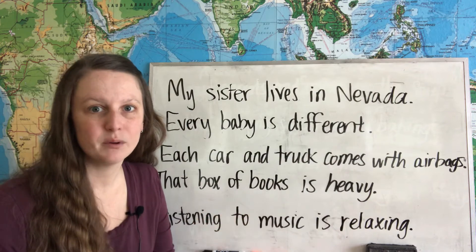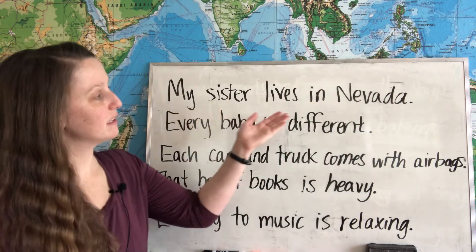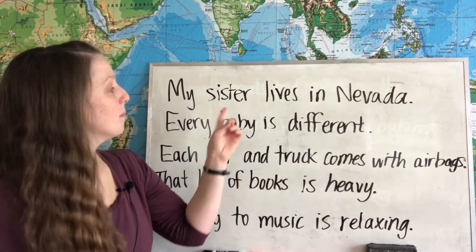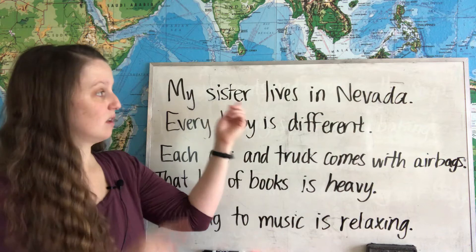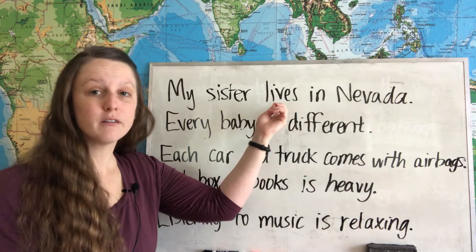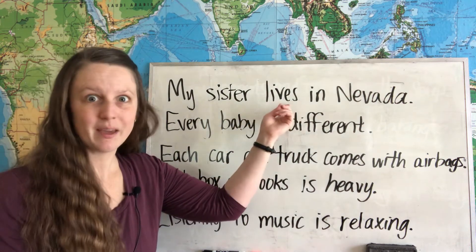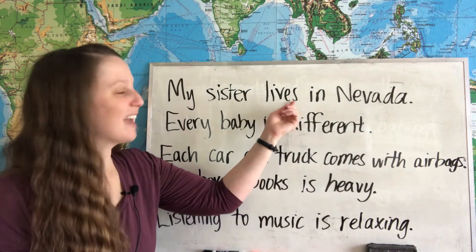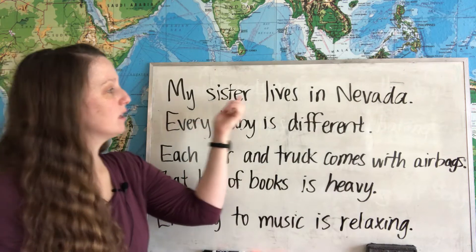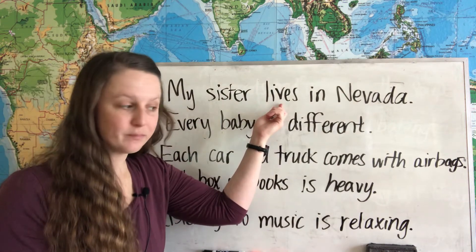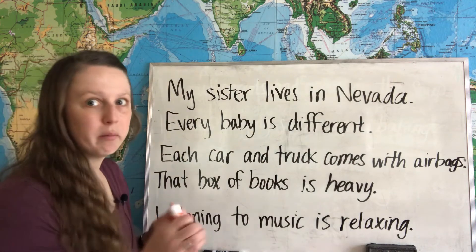Let's look at our examples. Our first example is: my sister lives in Nevada. Because we have sister — one sister — we use a singular verb. In the simple present we make verbs singular by adding S at the end. So we have a singular noun and a singular verb.